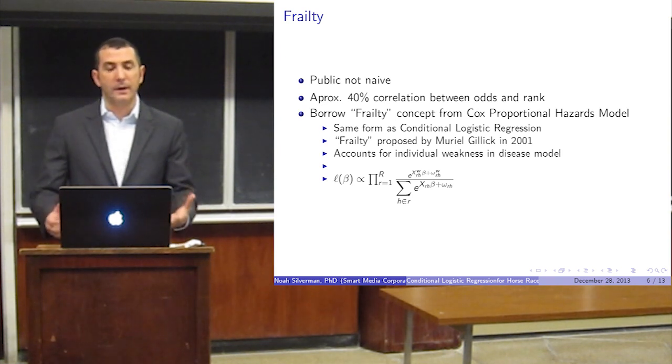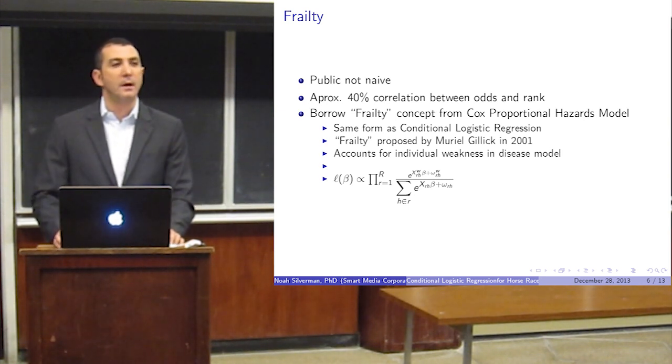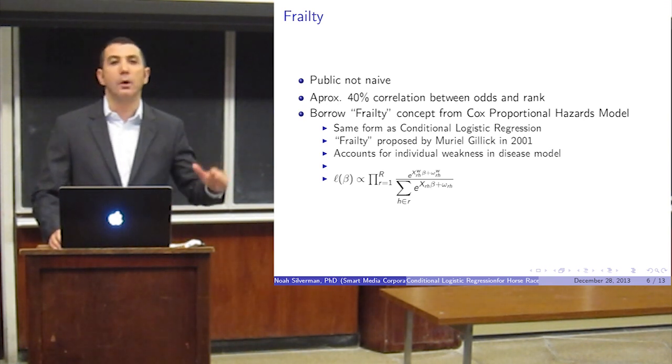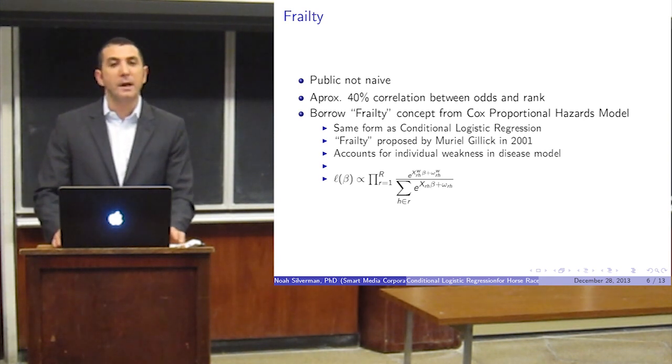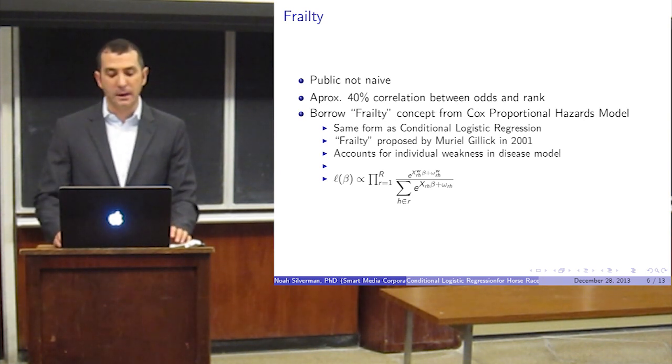I like to think of it as the public's sort of groupthink best guess, or the public's implied probability of the horse winning, in a sense that the more money the public bets on a horse, the more confident the public is on a horse, the lower the odds, the higher the percentage. So there is information there. There tends to be a 35 to 40 percent correlation between the public's favorite and the horses that win. So the public's not completely naive, and we should use that.